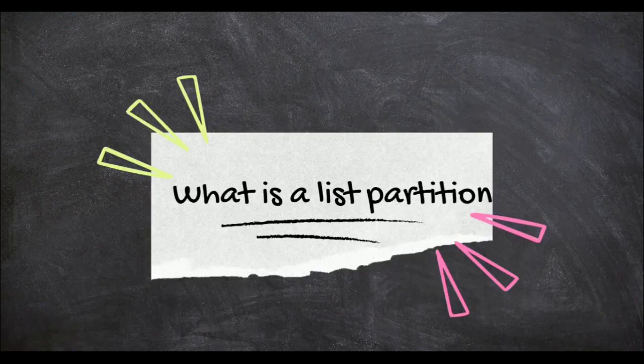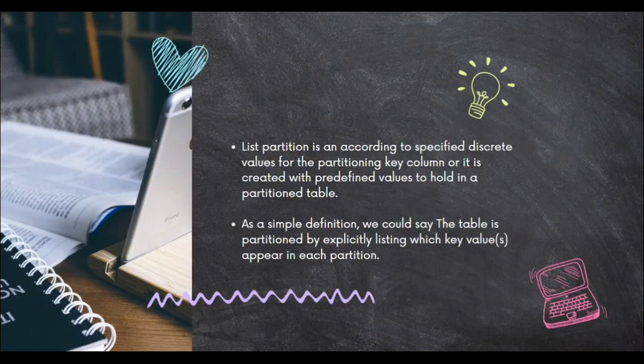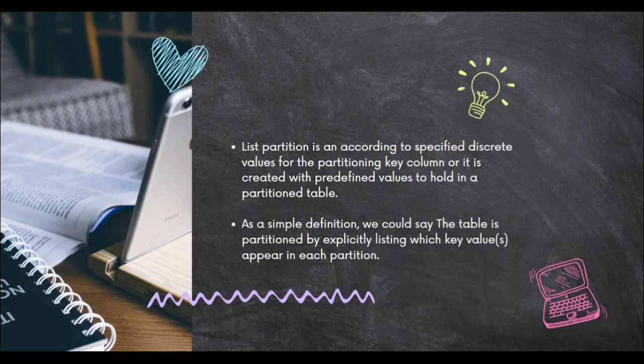What is a list partition? List partition is created according to specified discrete values for the partition key column, or it is created with predefined values to hold in a partitioned table. As a simple definition, the table is partitioned by explicitly listing which key values appear in each partition. It is very effective when we want to use groups of discrete data such as regions, departments, and products with arbitrary values.